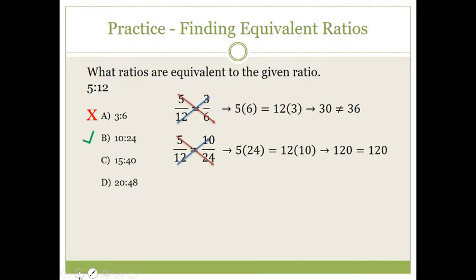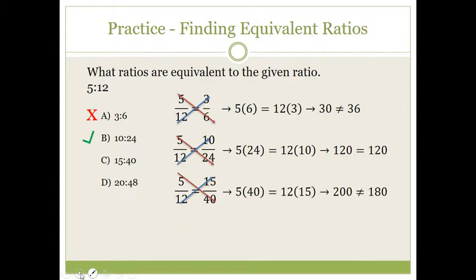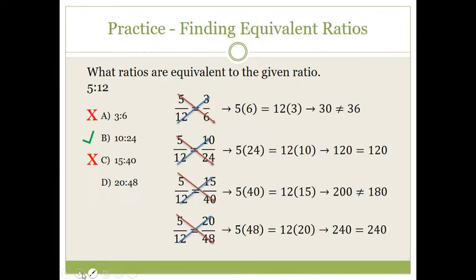We're checking to see if two fractions are equal — you've been finding equivalent fractions since fifth grade, and that's really all this is. Next, I check if five over twelve equals fifteen over forty. Five times forty is two hundred, and twelve times fifteen is one hundred eighty, so C is not equivalent. Then checking five over twelve against twenty over forty-eight: five times forty-eight is two hundred forty, and twelve times twenty is also two hundred forty, so option D is an equivalent ratio.